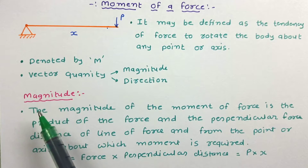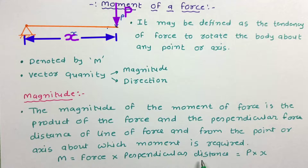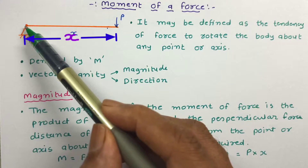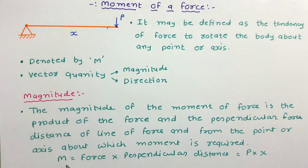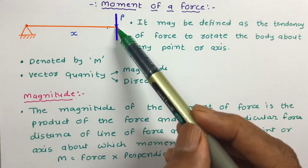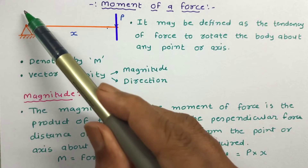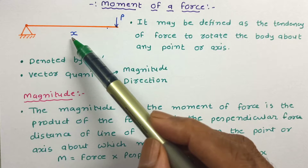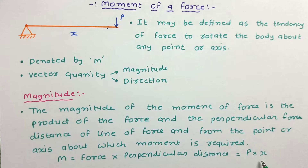To find the magnitude, we have to take the product of force and perpendicular distance. This perpendicular distance is measured from the line of action of the force to the point or axis about which we require to work out the moment. The magnitude of moment equals force into perpendicular distance. The distance x is between the line of action of force and point P, so the magnitude is P into x.